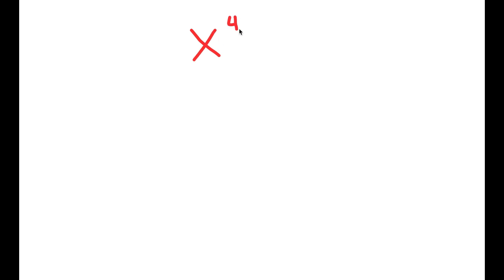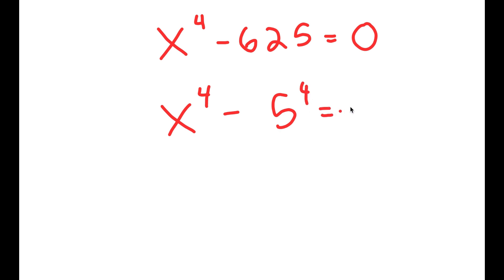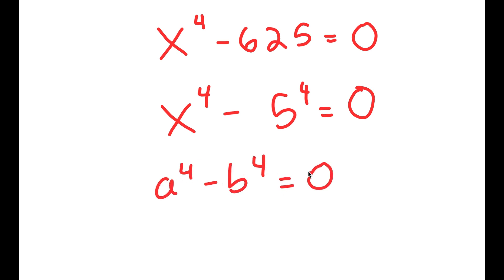In this video, I'm going to solve the equation x to the power of 4 minus 625 is equal to 0. To solve this, I'm going to first rewrite 625 as 5 to the power of 4. So now I have something in the form a to the power of 4 minus b to the power of 4 is equal to 0.